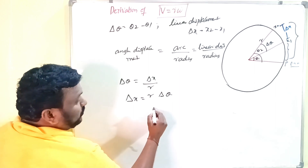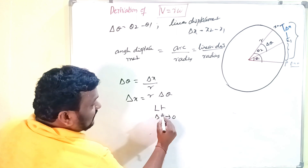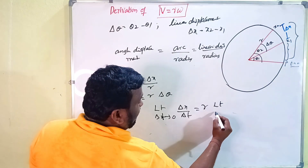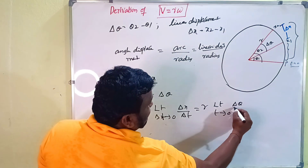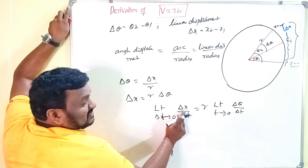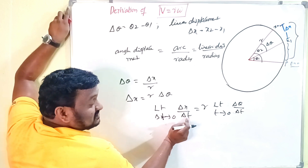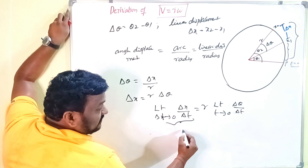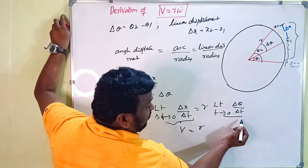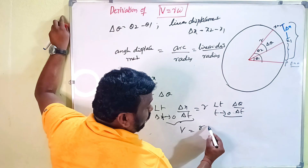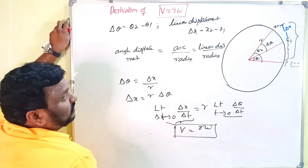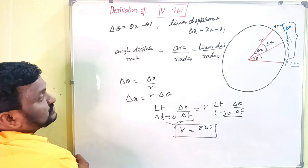Taking the limit as delta t tends to zero: delta x by delta t equals r times delta theta by delta t. Since r is constant, limit of delta x by delta t gives linear velocity v, and limit of delta theta by delta t gives angular velocity omega. Therefore, v equals r omega. This is the derivation of the relation between linear velocity and angular velocity.